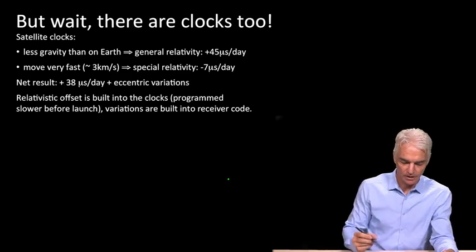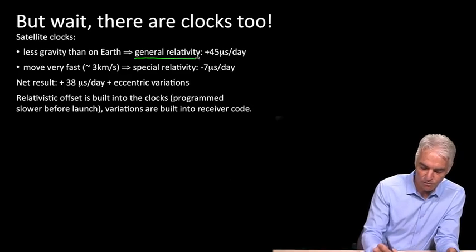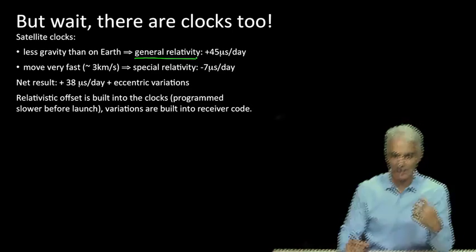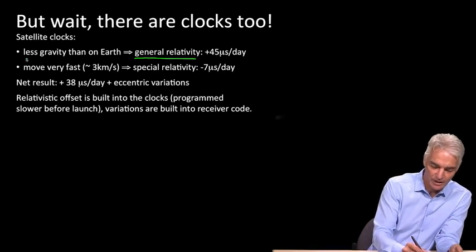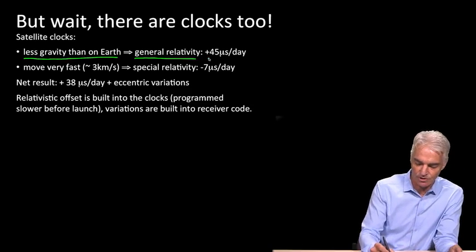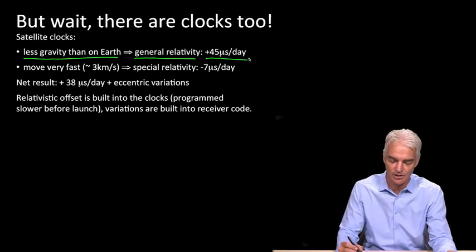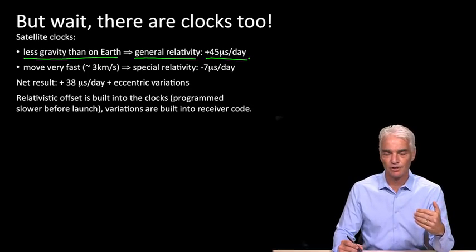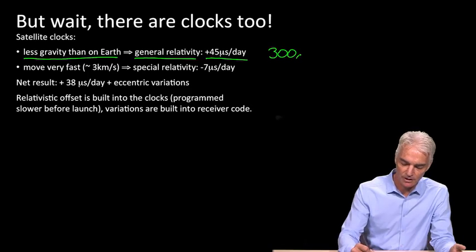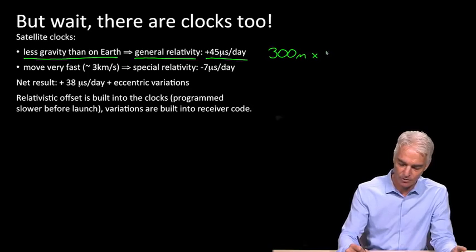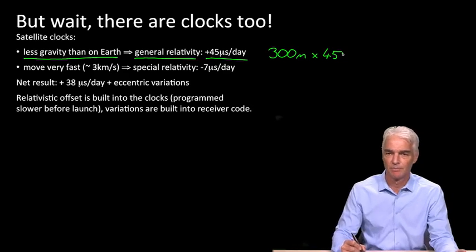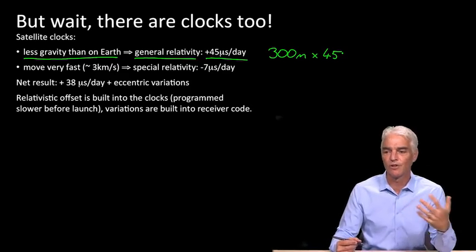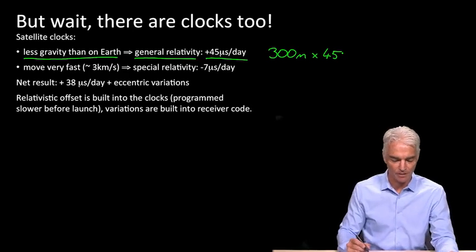However, we know that according to Einstein's theory of general relativity, when gravity gets less, time literally goes faster. Time is more free, where gravity is less. Time literally goes faster where there's less gravity. And where the satellites are, there is enough less gravity that time goes faster by 45 microseconds each day. So if this was somehow not accounted for, it would make a very big difference to the system, because light travels 300 meters in one microsecond. So light would travel 300 meters times 45 microseconds, and you'd be finding the satellite to be kilometers further away or closer than you expected if this was all wrong.